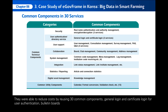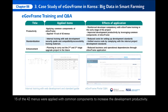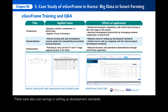They were able to reduce costs by reusing 30 common components: general login and certificate login for user authentication; bulletin boards and community management for collaboration; knowledge management for digital asset management. They also used calendar, format conversion, validation check, and utility common components. 15 of the 42 menus were applied with common components to increase development productivity. There were also cost savings in setting up development standards. The E-GovFrame adoption was able to eliminate dependencies on business and operations.